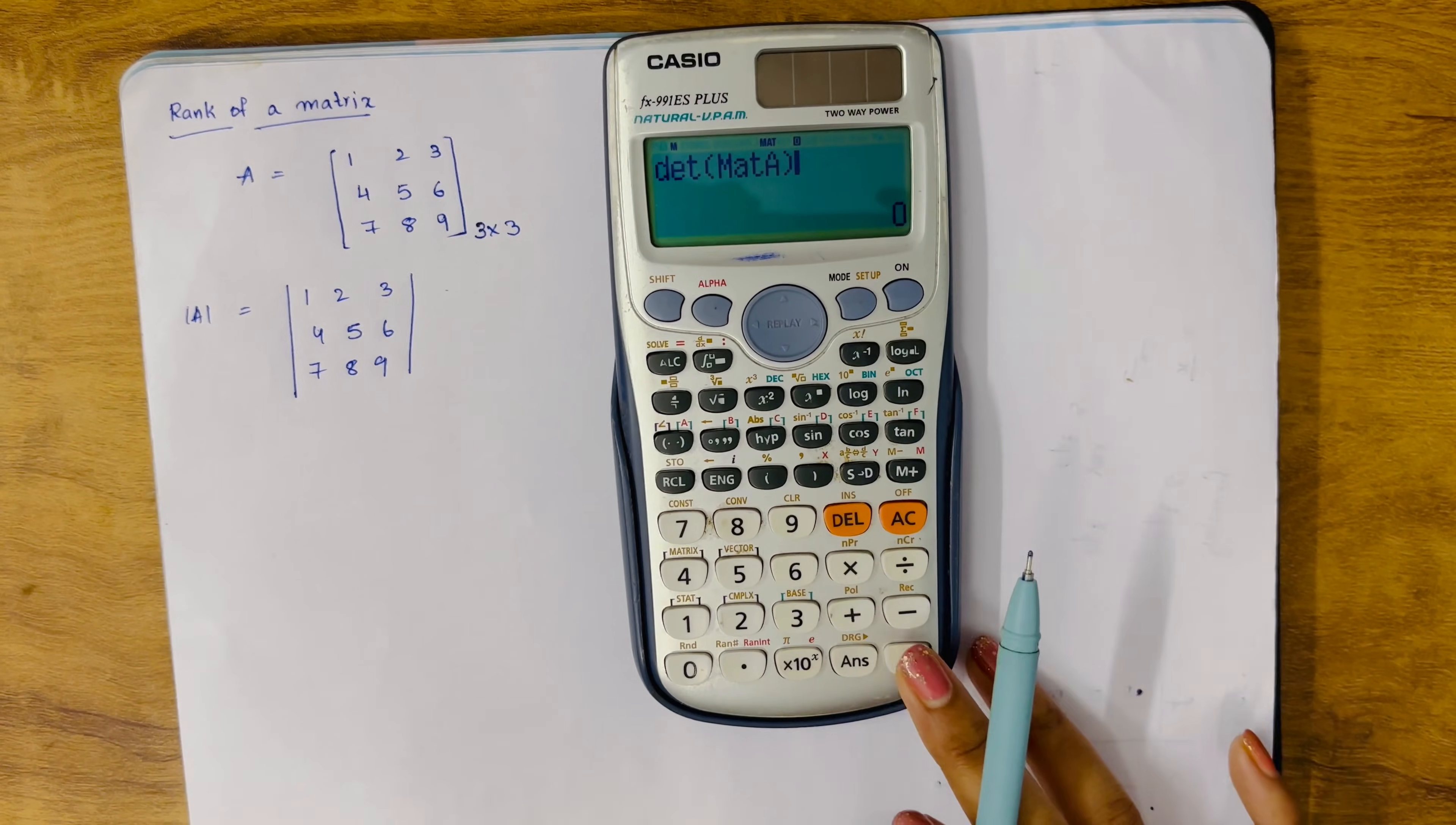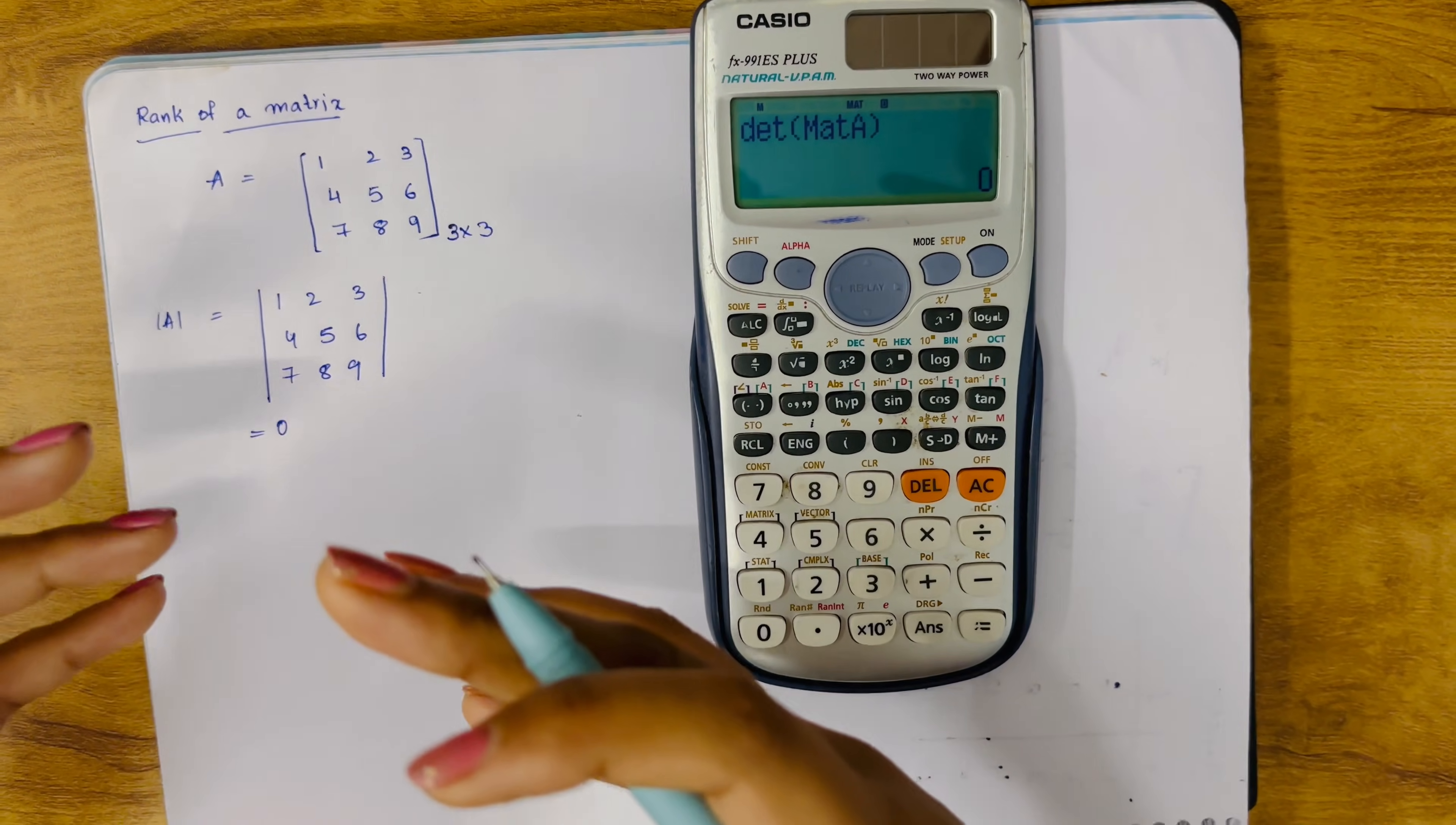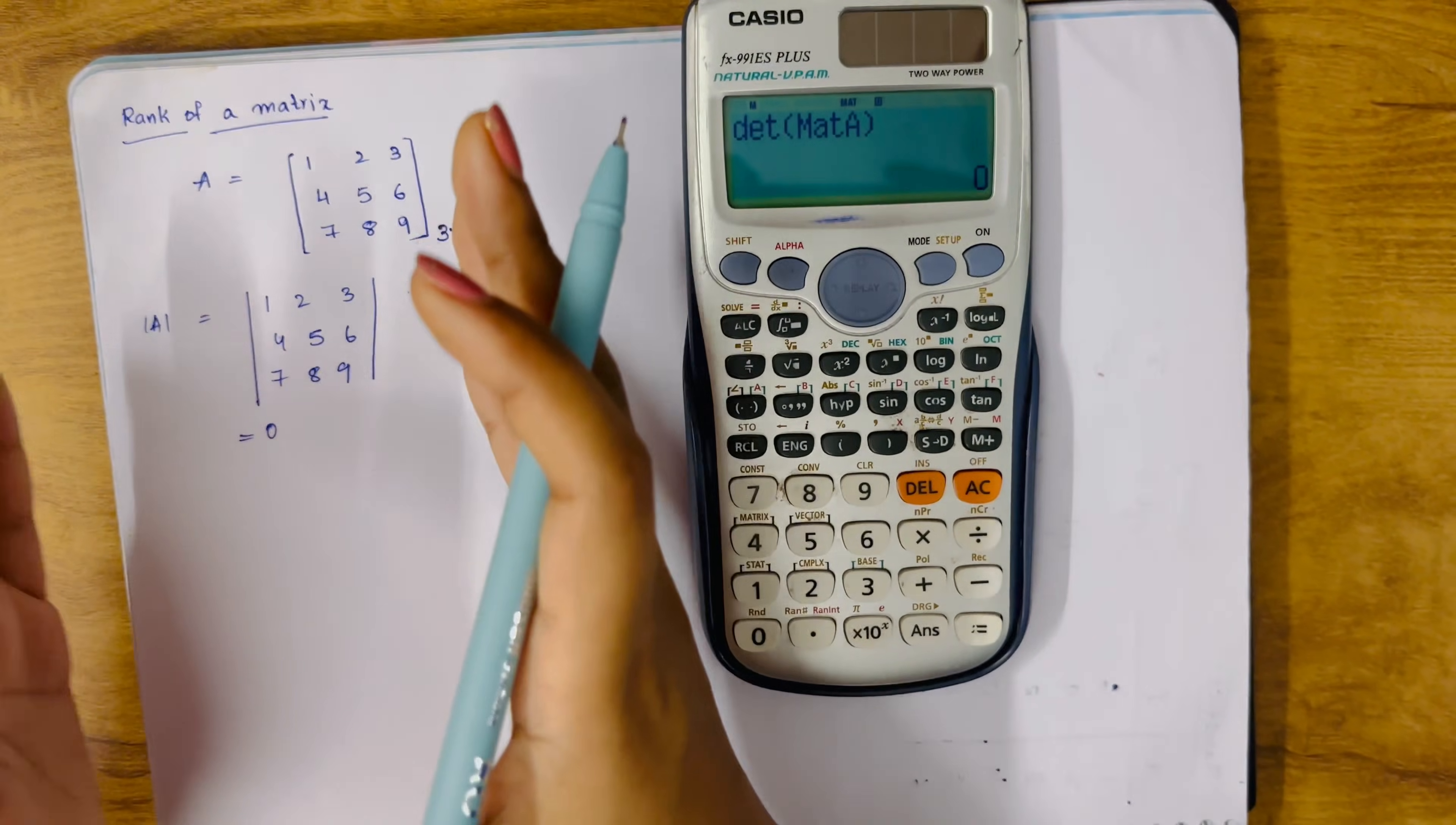Close the bracket. We got the det is 0. So det equals 0. So what we said is, any one of the minors, whatever determinant value we get, it should be non-zero, then the order of that particular matrix will become the rank. The det of this first 3 by 3 matrix is 0, so this is not it.